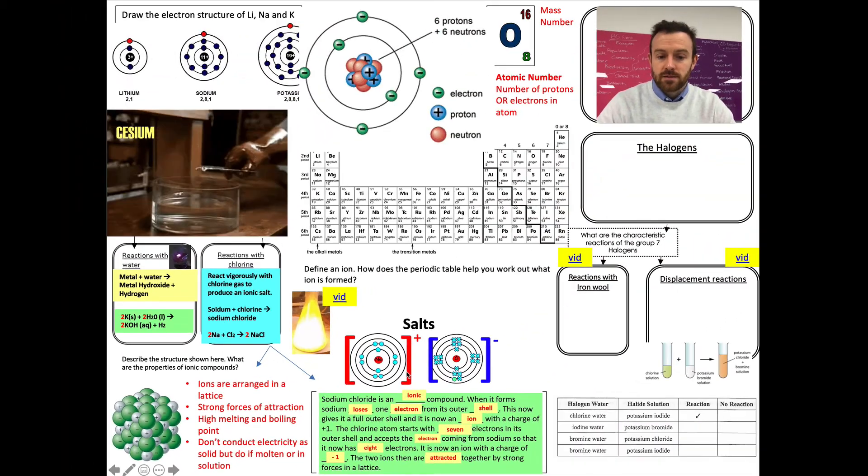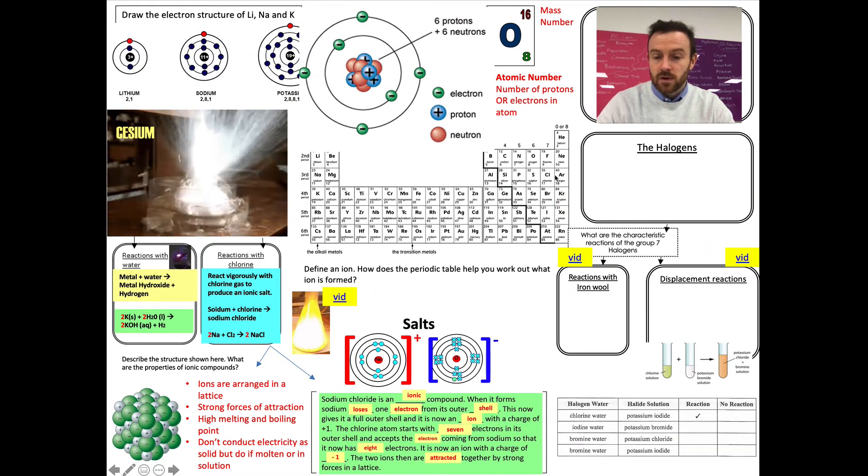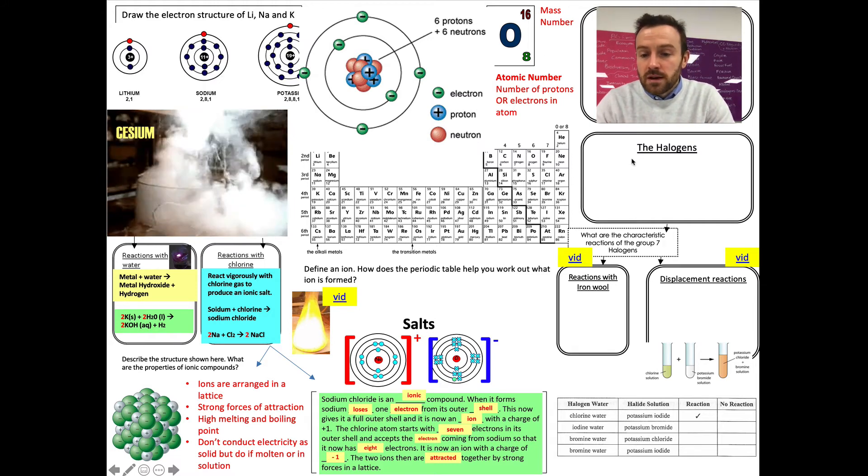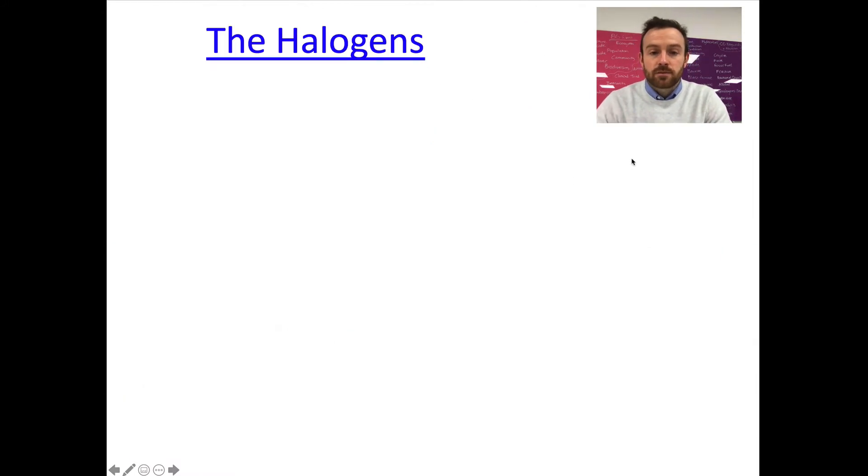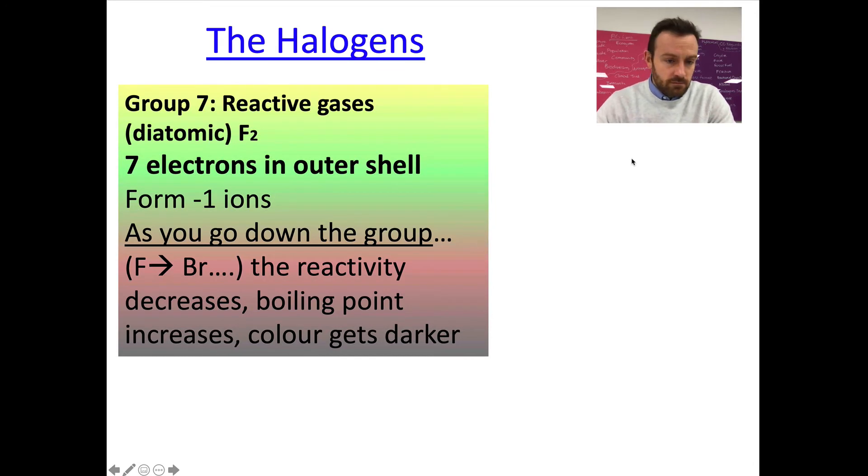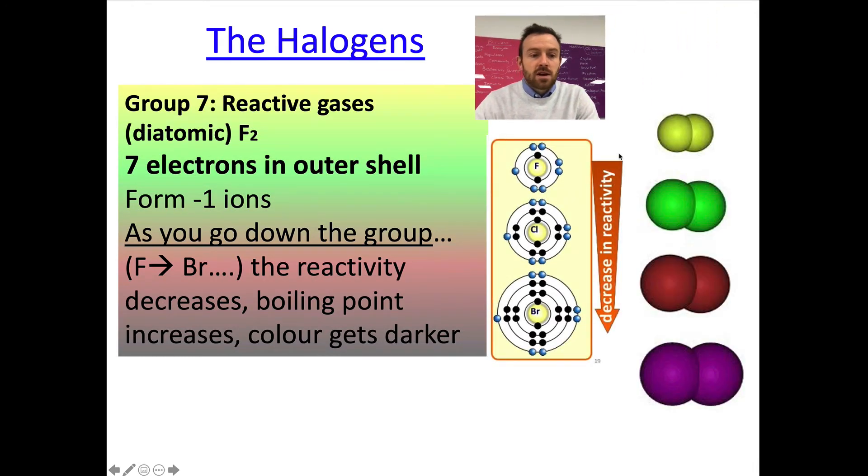Now, chlorine gas is an example of one of these, a halogen. Here it is on the periodic table right there. So, chlorine gas is a halogen. So, what do we need to know about the halogens? Okay? Well, here they are. First of all, they are reactive gases. Now, they're diatomic. So, that means because they've got seven electrons in their outer shell, they normally pair up, sharing one pair of electrons between them, forming a covalent bond between the two atoms. So, they exist as molecules, diatomic molecules.